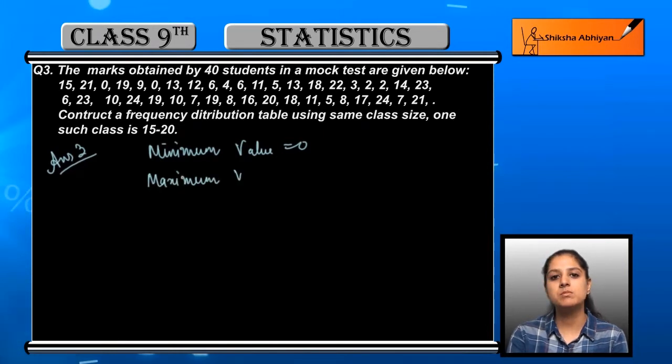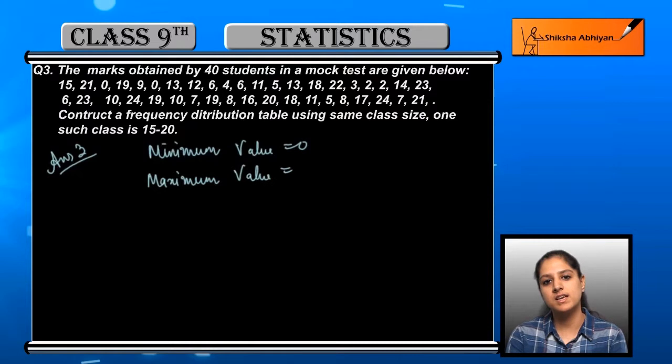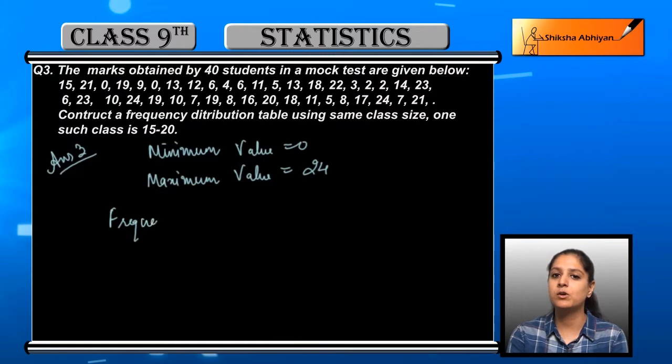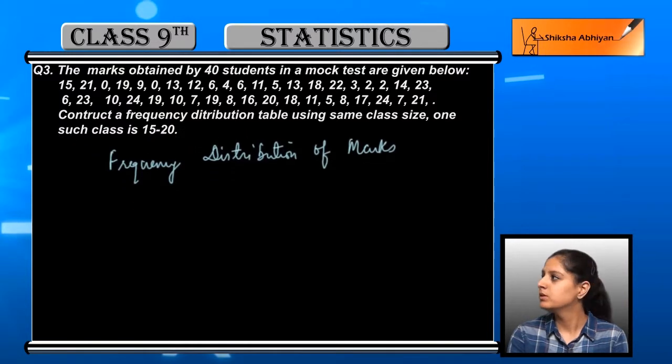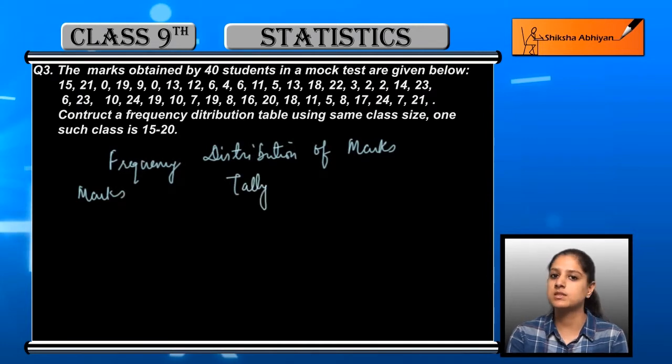If we have given this question that we have 5 to 5 class size, we have to make a table. What do we have to do? We have to identify minimum and maximum value. To form a frequency distribution of marks, we will form a table in which we have 3 columns. First is of marks.